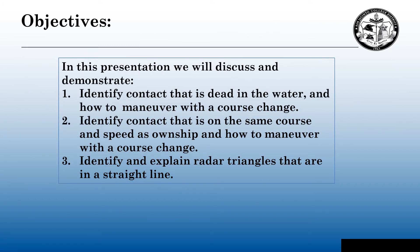The objectives for this presentation: at the end, you will be able to, one, identify a contact that's dead in the water and how to maneuver with a course change. Two, identify a contact that's on the same course and speed as the own ship and how to maneuver with a course change. Three, identify other types of triangles — ones not considered traditional, like right-angled, equilateral, or isosceles triangles — but rather triangles that are in a straight line.